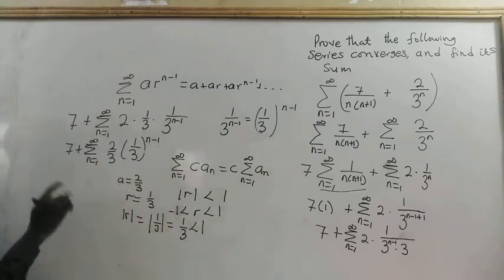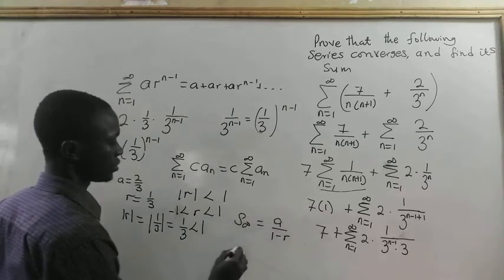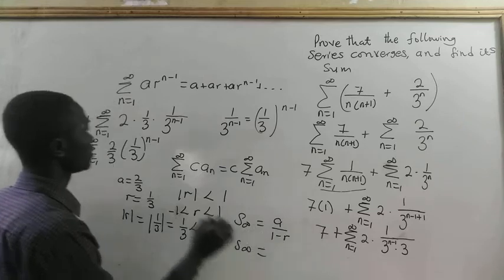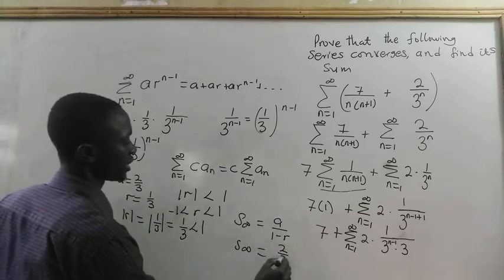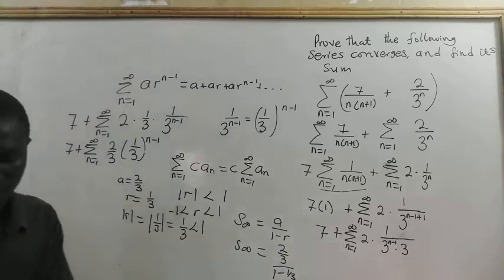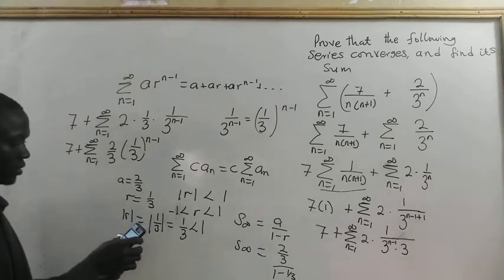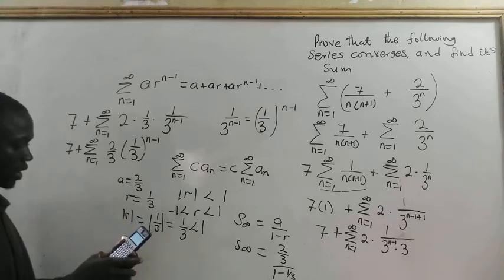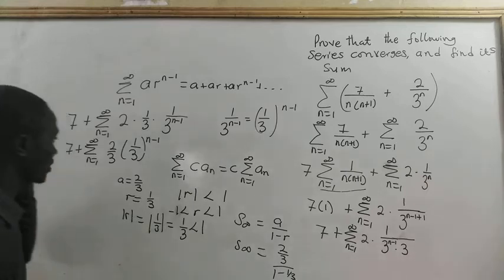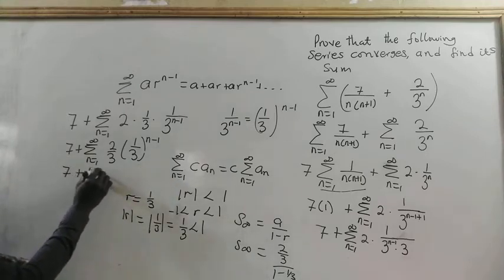Since it converges, its sum to infinity is a divided by (1 minus r). So the sum to infinity of the series is (2/3) divided by (1 minus 1/3), which gives us 1. So we have 7 plus 1 equal to 8. Therefore, this series converges and its sum is 8.